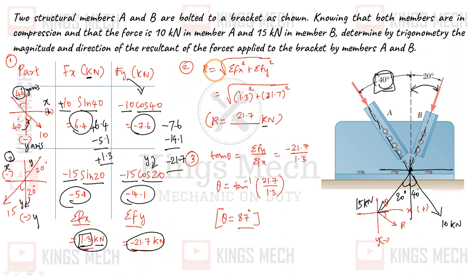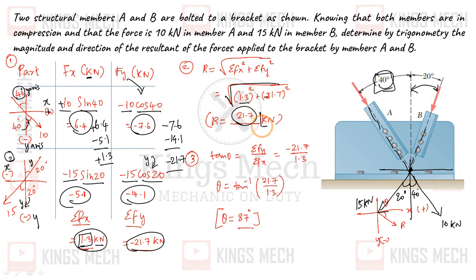This is our resolution. 1.3 squared plus minus 0.8 squared, and then it is evaluated by taking the square root. The result is again 21.7 kN.